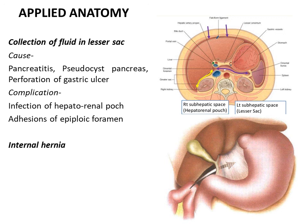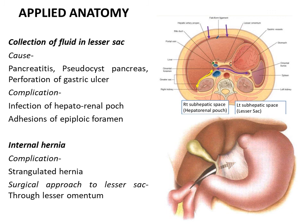Internal hernias: coils of intestine may herniate into the lesser sac through the epiploic foramen. As the epiploic foramen is a small opening, these internal hernias predispose to strangulation — that is, cutting off of the blood supply to the herniated loops of intestine — which is a surgical emergency requiring immediate treatment. The surgical approach to the lesser sac is always through the lesser omentum and never through the foramen of Winslow, because of the important structures forming the anterior and posterior relations of the epiploic foramen. To reduce the hernia or drain fluid, the lesser sac is always approached through the lesser omentum.